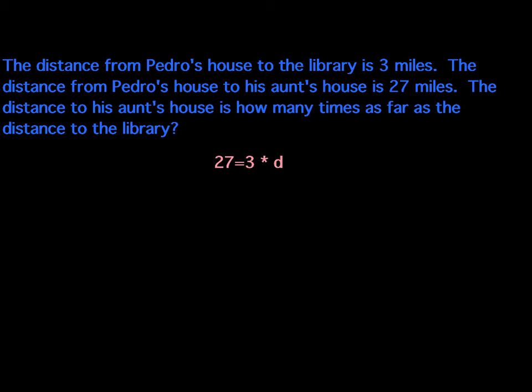It tells us what we're trying to find. We're trying to find how many times as far as the distance to the library, as far as his aunt's house goes. So we know his aunt's house is 27 miles from Pedro's house. So that's where this 27 comes in. And we know that the distance from Pedro's house to the library is three miles. So that's where we got the three. So why are we going to take that three times D? Well, because the problem tells us that the distance to his aunt's house is how many times as far as the distance to the library. So we're basically doing a division problem there. Because we have 27 miles, and we have three miles.